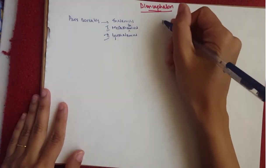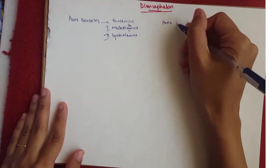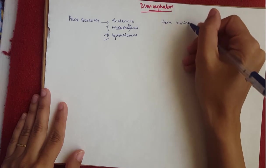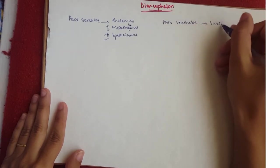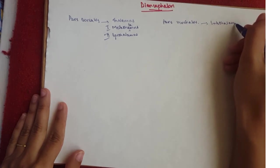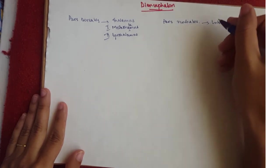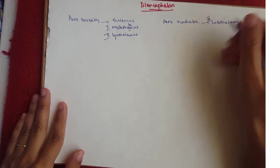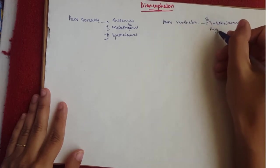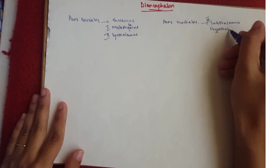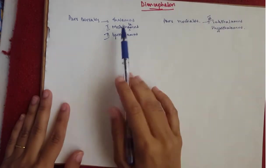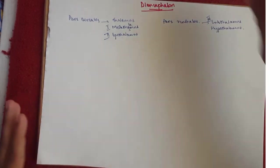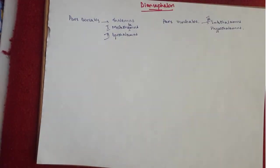Then we've got the pars ventralis, which consists of the subthalamus, and this is also known as the ventral thalamus, which I'm going to write as number three. And then we've got the hypothalamus over here. So we're going to talk about one, two, and three.